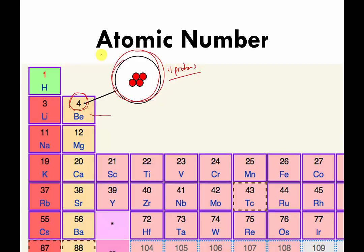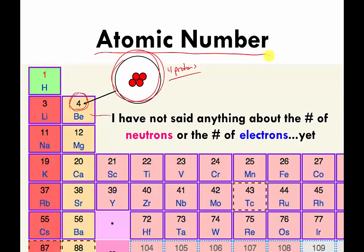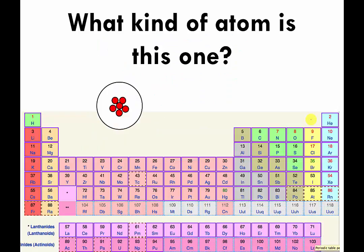Another way of saying that is the atomic number is four. I want to point out that even though I've been discussing protons, I have not said anything about the number of neutrons or electrons in the atoms yet — we will get to that in subsequent videos.